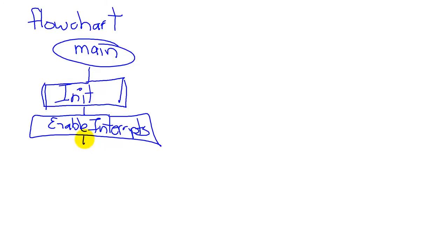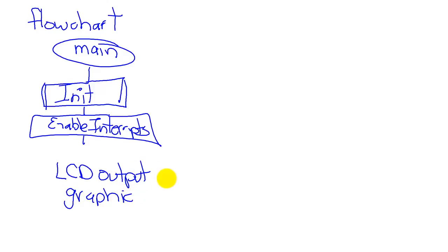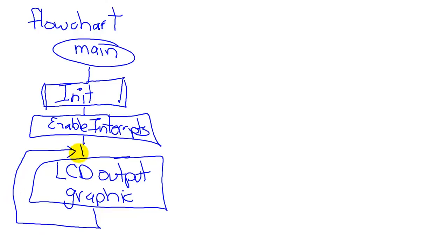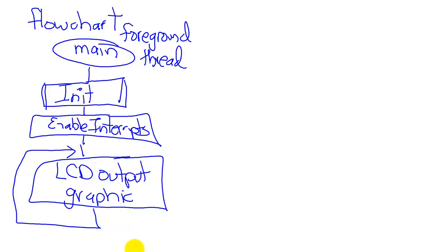To make the game extremely interactive, our recommendation is to do all graphical LCD outputs in the main loop — what we call the foreground thread, which executes when there are no interrupts. Of all the things we do, the LCD output will be the slowest, taking on the order of milliseconds to generate actual output to the graphics.